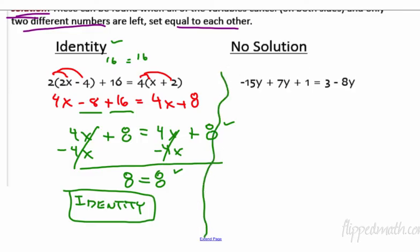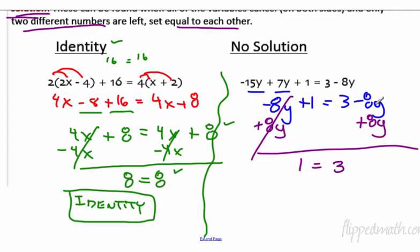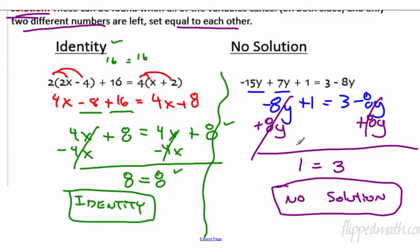The opposite of identity is no solution. Combine like terms: negative 15y plus 7y is negative 8y, so we have negative 8y plus 1 equals 3 minus 8y. Add 8y to both sides — they cancel — and we get 1 equals 3. When does 1 equal 3? Never. So we write no solution. Negative 8y plus 1 can never equal negative 8y plus 3 — you can't add 1 to a quantity and get the same as adding 3.